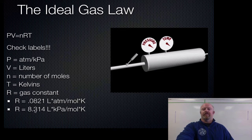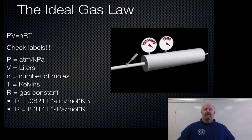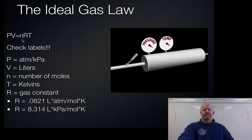You can use an R value with atmospheres in its label or one with kilopascals. If your problem calls for kilopascals, you use 8.314. If your problem calls for atmospheres, you use 0.0821. The label for R is liters times atmospheres divided by moles times Kelvin — it's a gigantic label, just like speed is meters per second. This equation now allows us at any pressure, temperature, and volume to solve for number of moles, which we can then apply to stoichiometry problems.